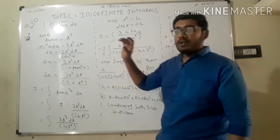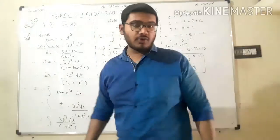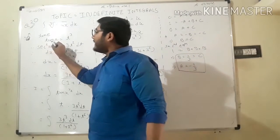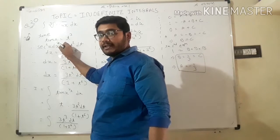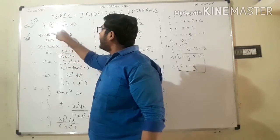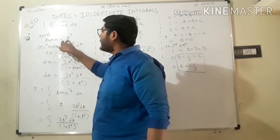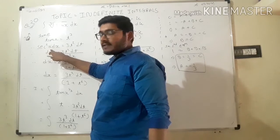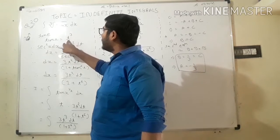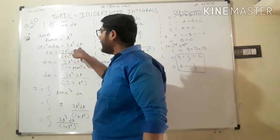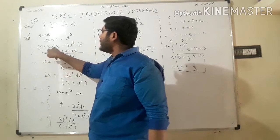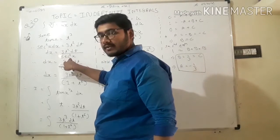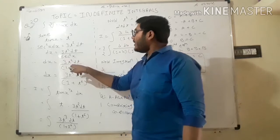First of all, what we have to do here: we take tan(x) equal to t cubed. So d/dx of tan(x) is sec²(x) dx, and d/dx of t³ is 3t² dt. So dx equals 3t² dt upon sec²(x).